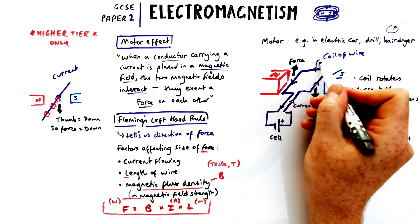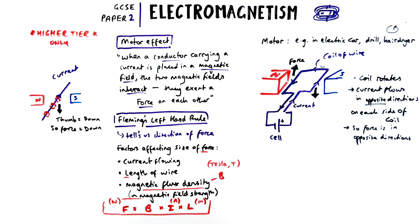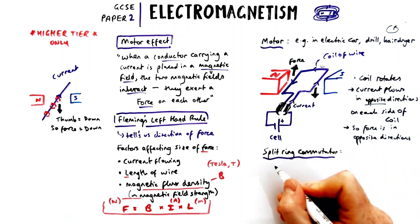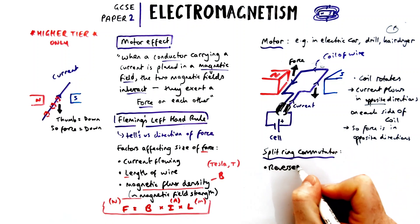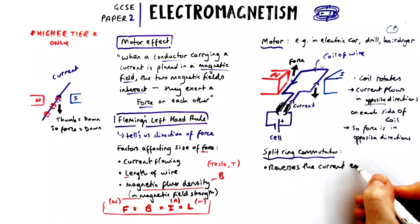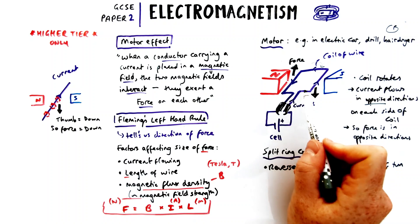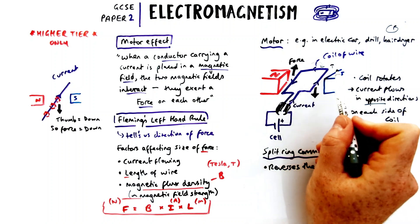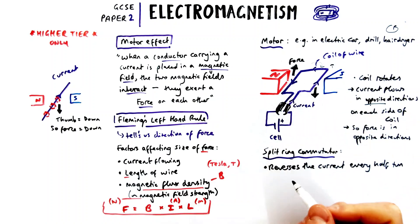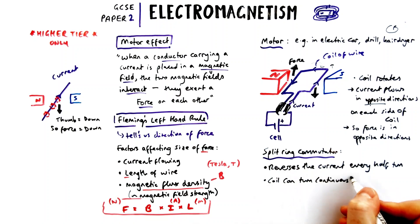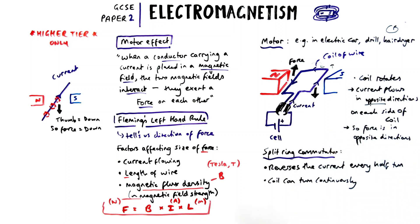There's a problem though: without any modification, the coil would just rotate half a turn and then go back. That's why we need something called a split ring commutator. The split ring commutator reverses the current every half turn so it allows the coil to turn continuously — it's a rotating ring with a gap in it that flips the positive and negative connections every half turn.